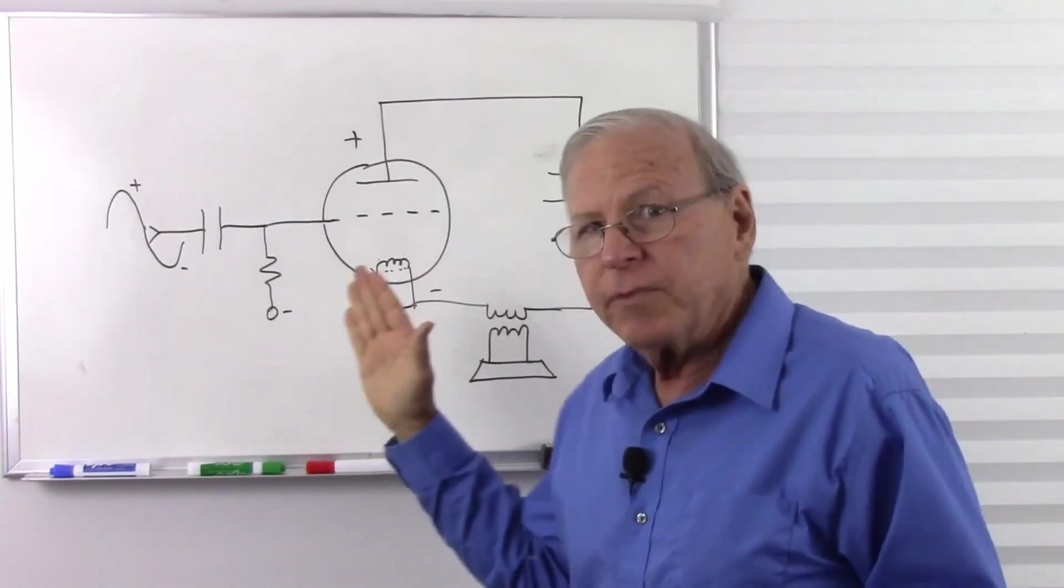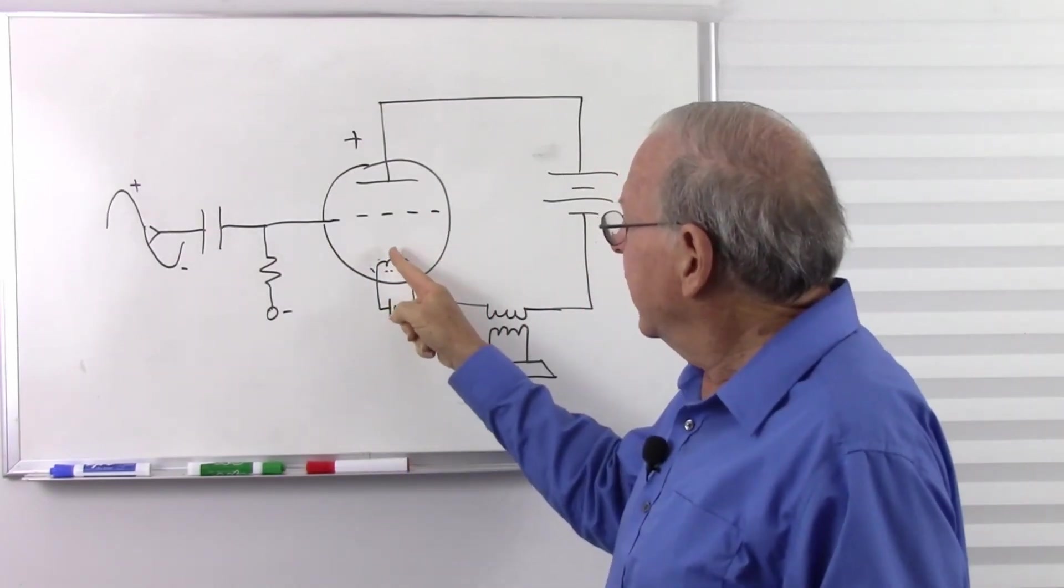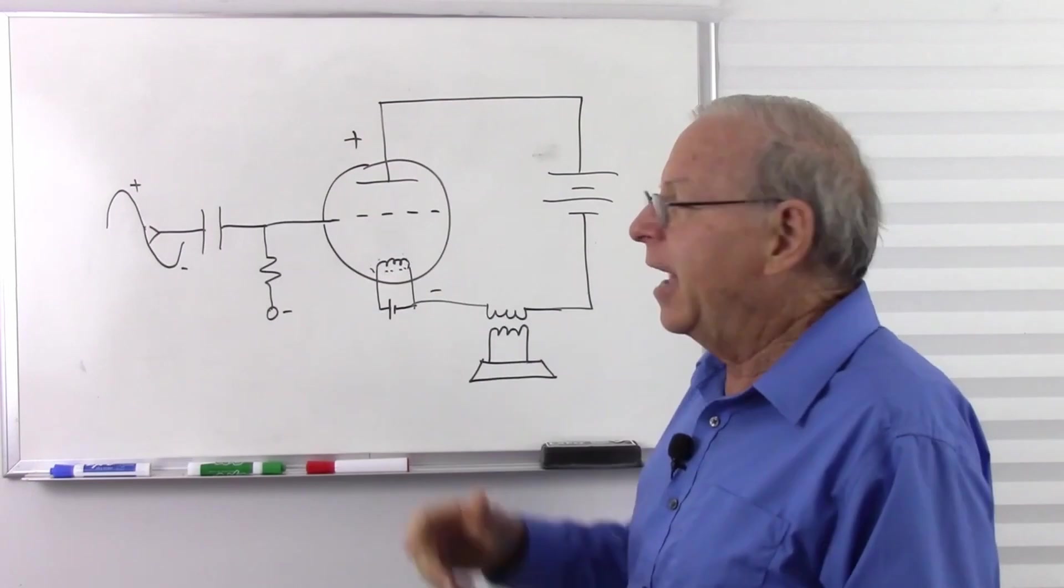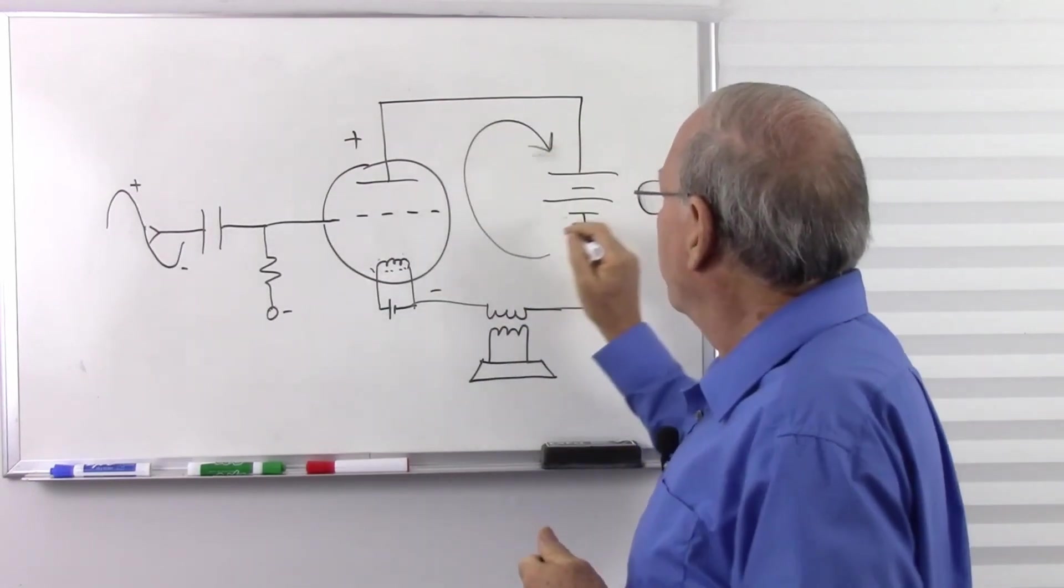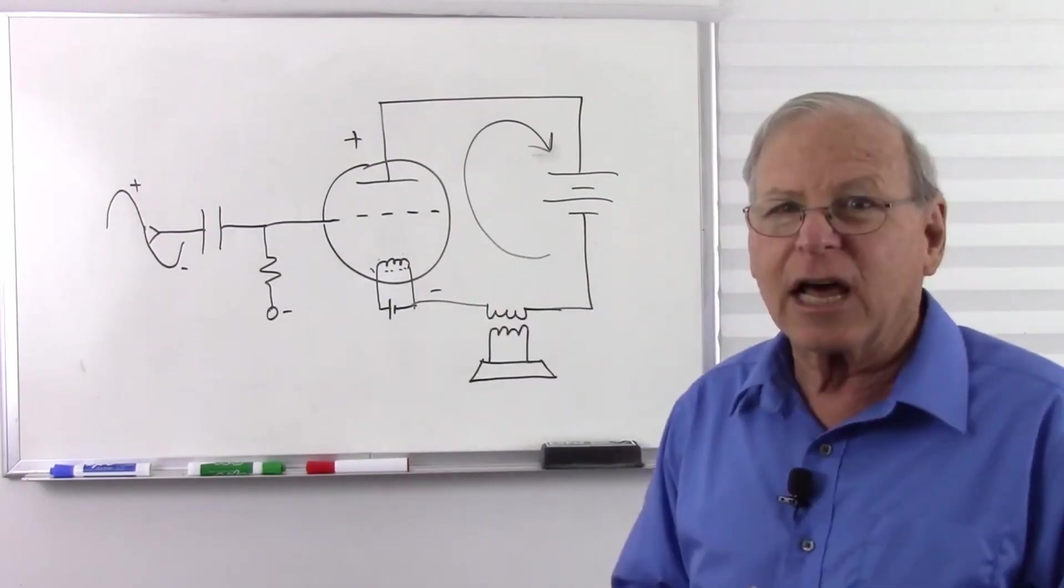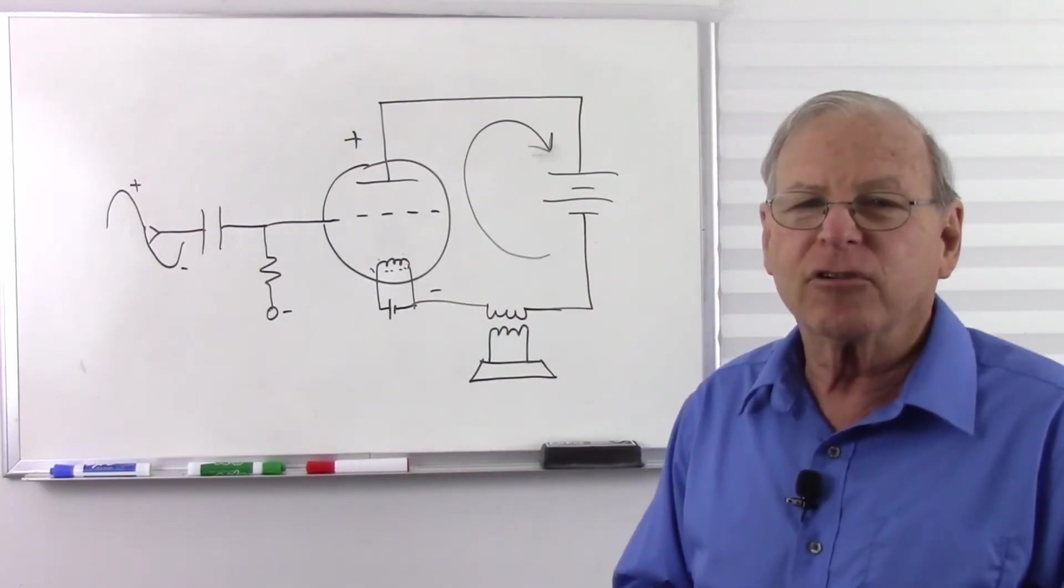So when we analyze how a vacuum tube works, we've watched the electrons go from the cathode to the anode. So we have electron flow going from negative to positive. So how can you analyze a vacuum tube with conventional current?